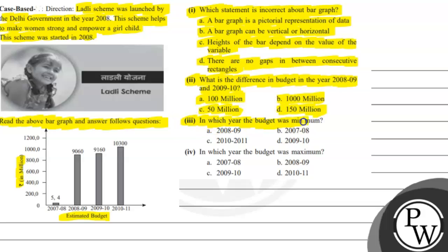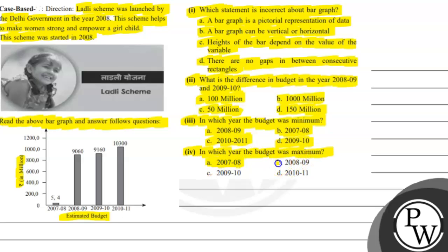Third question: in which year was the budget minimum? Option A: 2008–09. Option B: 2007–08. Option C: 2010–11. Option D: 2009–10. Fourth question: in which year was the budget maximum? Option A: 2007–08. Option B: 2008–09. Option C: 2009–10. Option D: 2011–12.